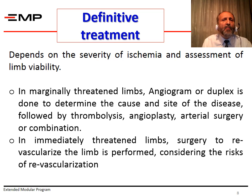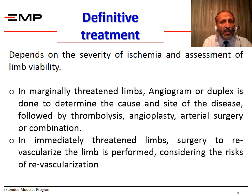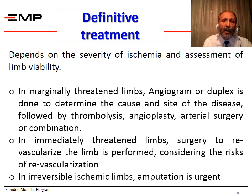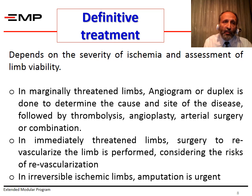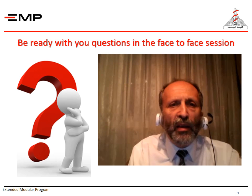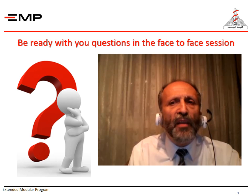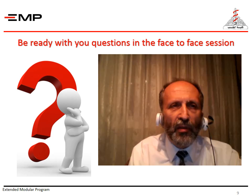In an immediately threatened limb, surgery to revascularize the limb is urgent. However, we should consider the risks of revascularization and manage its consequences — those patients may need what we call a fasciotomy. In irreversible ischemia, amputation is urgent. Please be ready with any questions for the face-to-face session. Thank you.